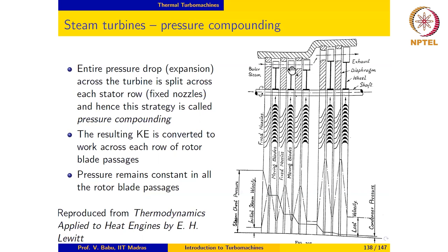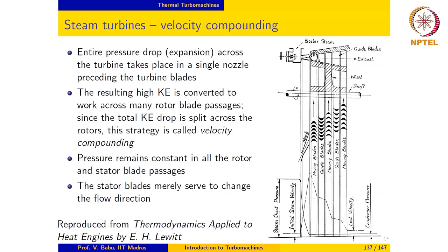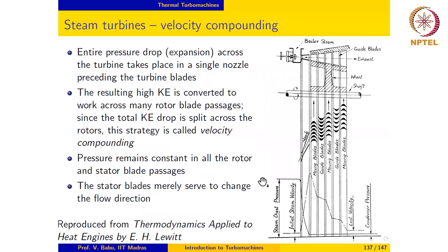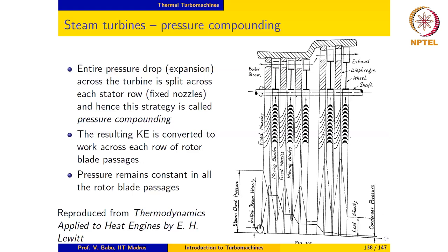The increase in blade height is not quite as large as in velocity compounding because the pressure decrease is gradual, but after some number of stages there is a considerable increase in cross-sectional area to accommodate the continuously expanding steam. The important points are that the pressure drop takes place in many steps, the velocity increases in the nozzle passage and decreases in the rotor passage, repeating until the exit velocity is reached. Since the pressure decrease takes place in steps, this is called pressure compounding.